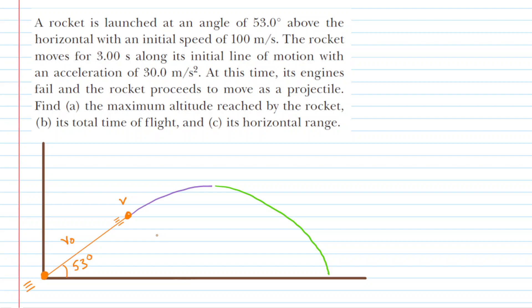This problem is a little bit convoluted, and we're going to divide it by color just to keep track of things. For the first segment of the journey, we'll use an orange color to denote all of the quantities. During that segment, the rocket is moving in a straight line path with an initial velocity of 100 meters per second. The time required to travel that straight line path is 3 seconds, and the acceleration is 30 meters per second squared.